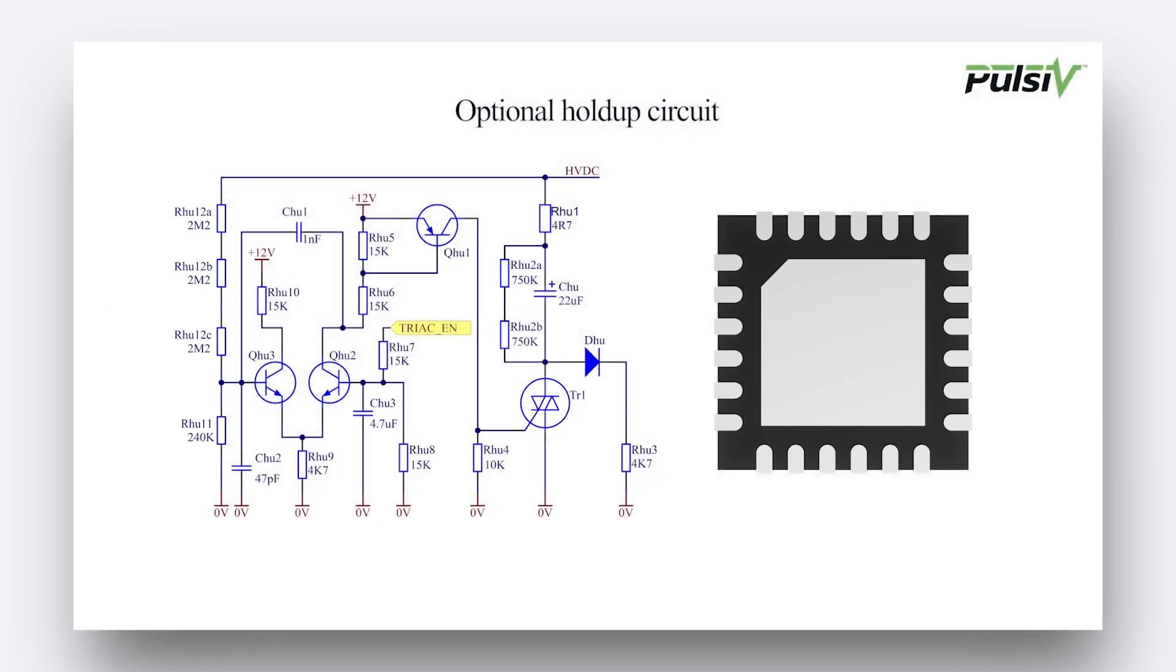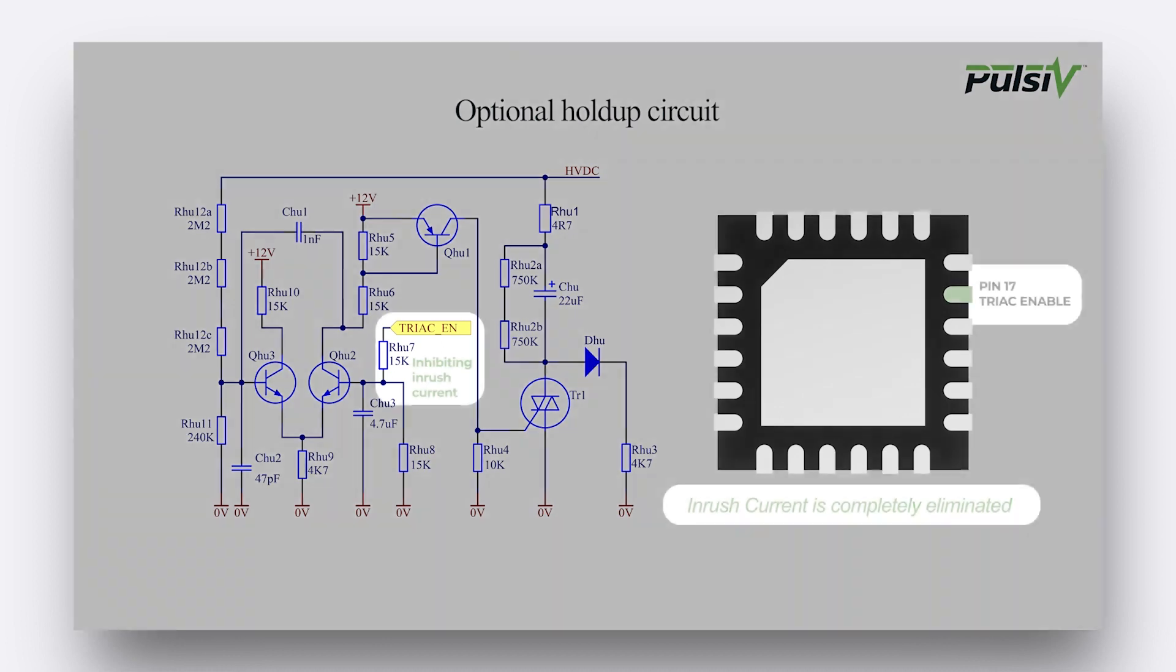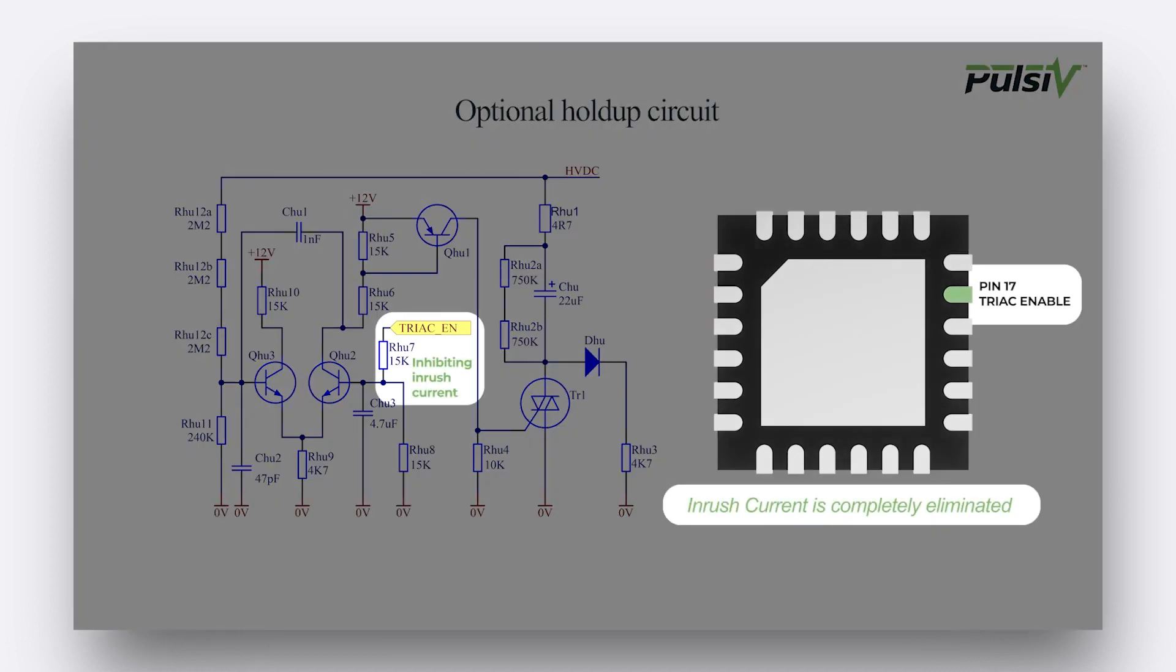This setup can cause an inrush current during initialization when the HVDC voltage is low. To control the thyristor during initialization, the pulsive osmium microcontroller includes a means of inhibiting this inrush current.